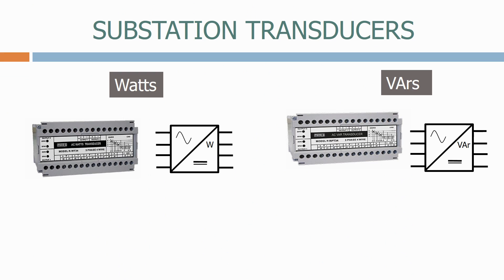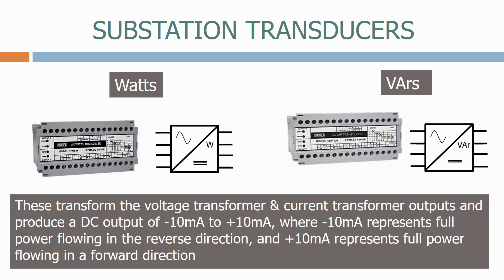Finally, we have a watts transducer and vars transducer. These transform the voltage transformer and current transformer outputs, and produce a DC output of -10mA to +10mA, where -10mA represents full power flowing in the reverse direction, and +10mA represents full power flowing in the forward direction.